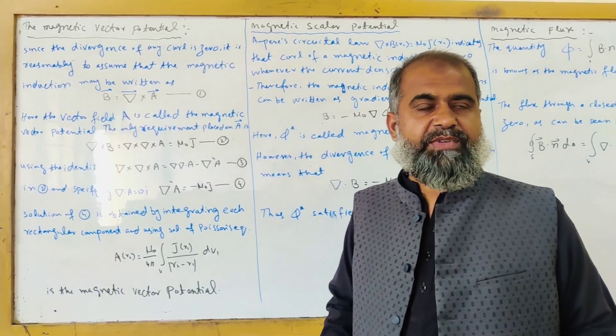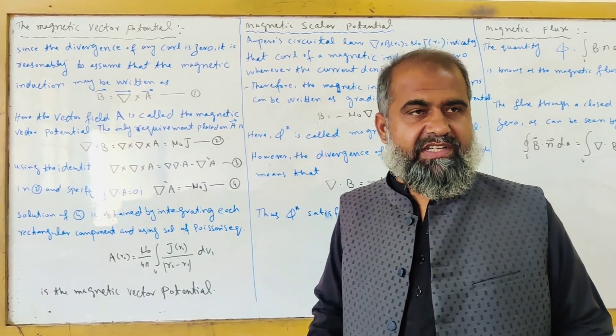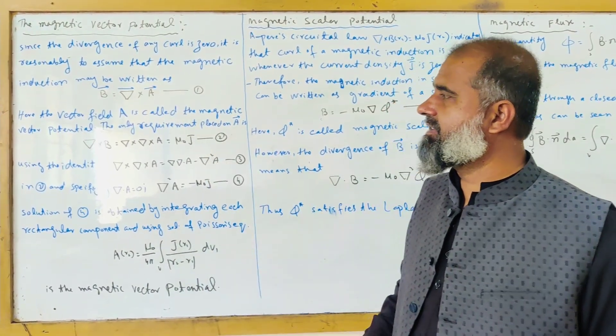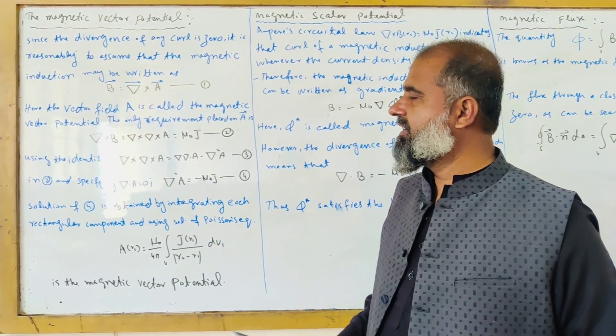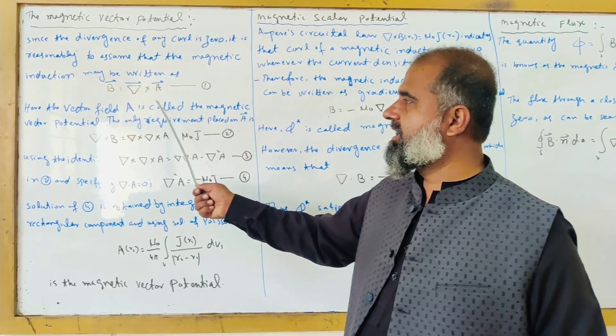B is the magnetic induction, del is the operator, and A is the vector field, and is called the magnetic vector potential.